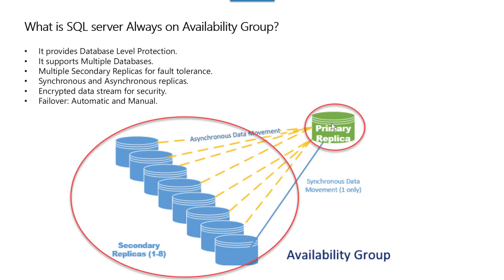How does it work? It has two different replicas: one is primary replica and then secondary replicas. There can be one to eight secondary replicas and three primary replicas. These primary and secondary replicas can be synchronized with two options: first is asynchronous data movement and second is synchronous data movement. It also provides an encrypted data stream for the highest security, and whenever you want to fail over to another instance you can do it either automatically or manually.